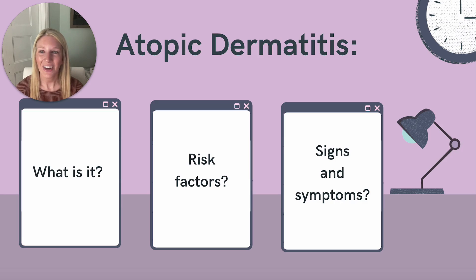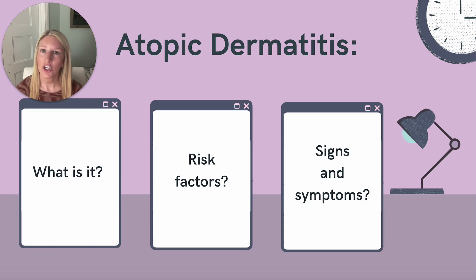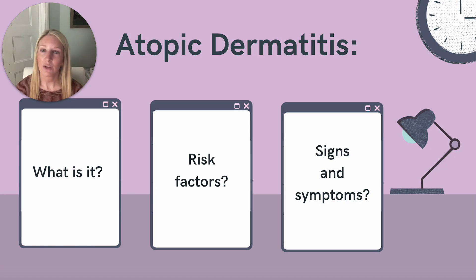Next up, atopic dermatitis, also known as eczema, is a chronic pruritic inflammatory skin disease that occurs most frequently in children. This condition is often associated with an elevated serum level of immunoglobulin E, or IgE. Risk factors include a personal or family history of atopy and environmental exposures such as climate, air pollution, and water hardness.